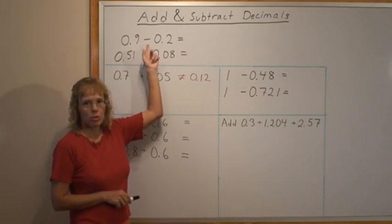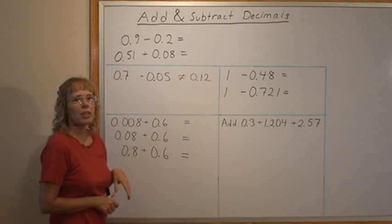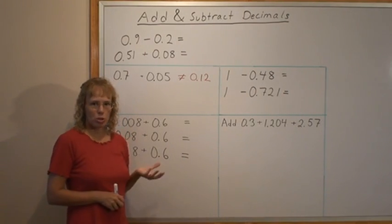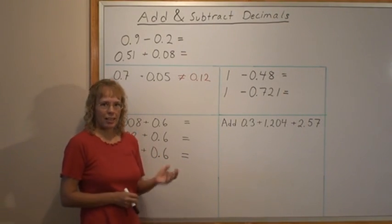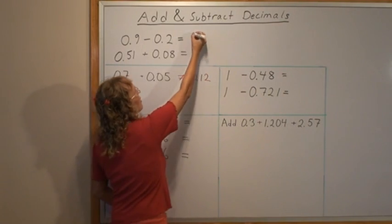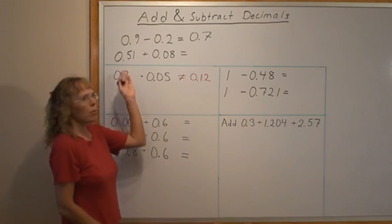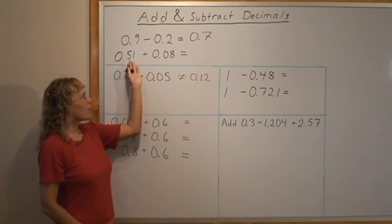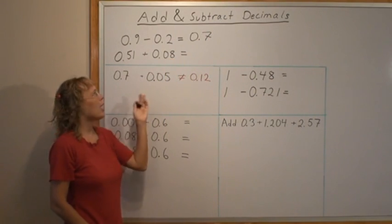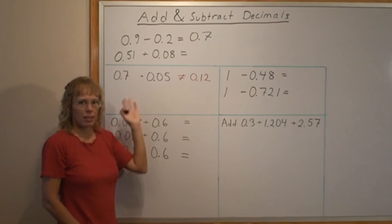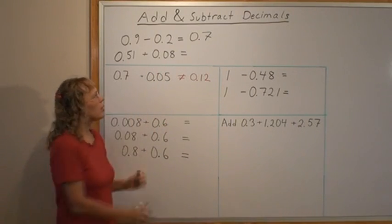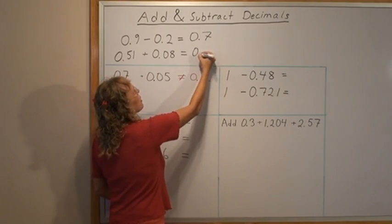Here's 9 tenths minus 2 tenths. The student can just subtract 9 minus 2 and get 7 tenths. And the answer is 0.7, 7 tenths. And in this example it is easy too because we have hundredths and hundredths. So we can just add 51 and 8 to get 59 and the answer is hundredths. So it's 0.59.